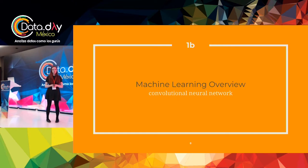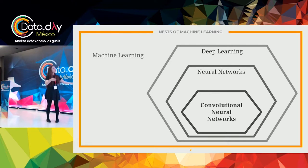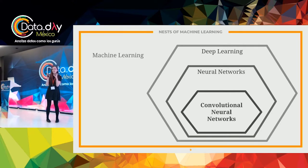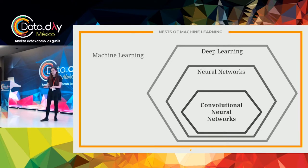Now we're going to talk about convolutional neural networks, which is what our model is going to be based on. This is the nest of machine learning. There's machine learning, then you go down to neural networks, and then to convolutional neural networks. A CNN is very similar to a neural network, but it has a pre-processing step optimized for taking in images, adjusting them to pull out cool features, and then it runs a neural network on those things. It takes an abstract image and makes features that the computer can understand.